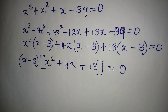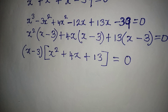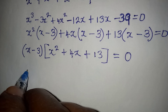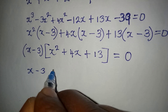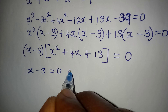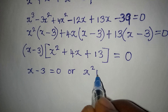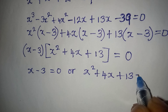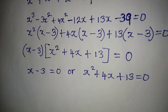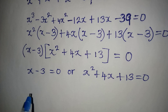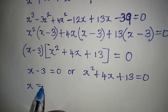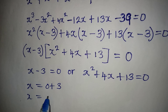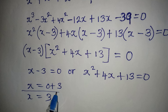Applying the zero product rule — the question says to solve completely — we have x - 3 = 0, or x² + 4x + 13 = 0. From the first factor, x = 3. This is a real solution to the problem.